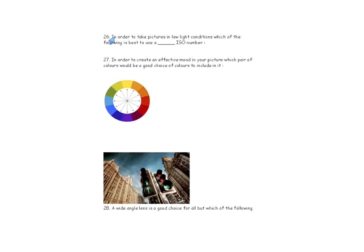To recap ISO: on a bright sunny day, use a low ISO number like 100. In low lighting conditions — for example at a concert — use a high ISO number like 400 or 800. A higher ISO helps the camera gather more light in dark environments.